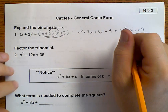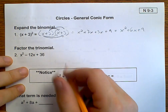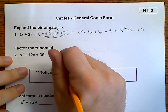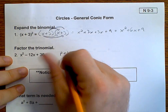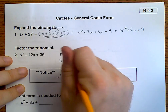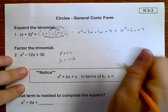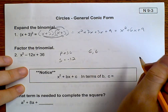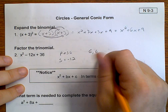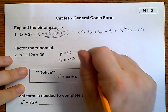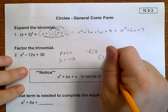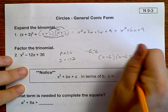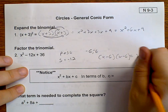Now let's go ahead and factor this. I want to know what multiplies to 36 and adds to negative 12. That would be negative 6 and negative 6. So this factors as x minus 6 times x minus 6, which is x minus 6 squared.